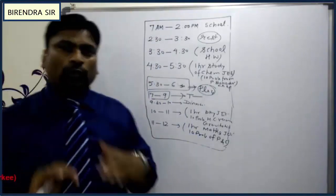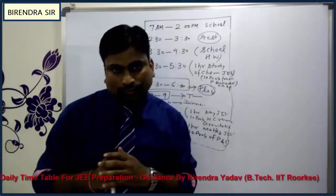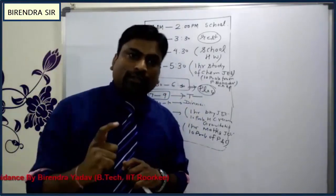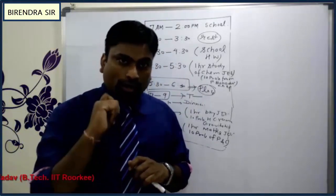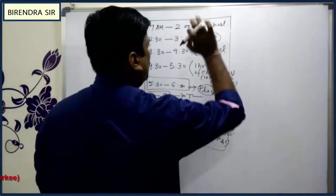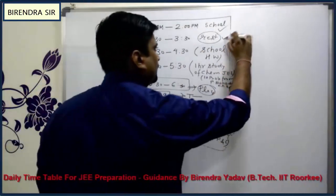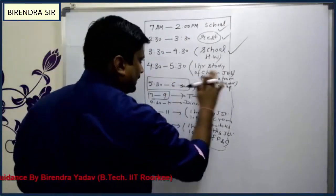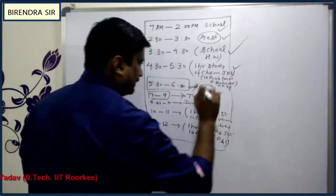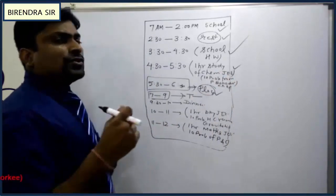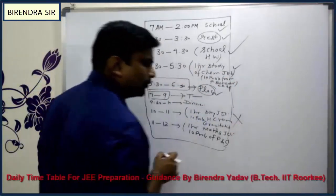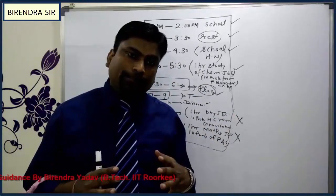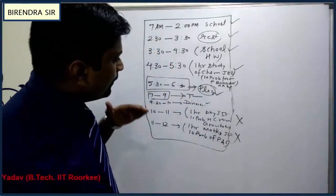On Monday, try to follow this schedule. On Monday night, do an analysis of the work you have done. If you went to school, put a tick mark. Took rest — tick. Done school homework — tick. Studied chemistry — tick. If for some reason you did not do something, put a cross mark. After analysis, you may find two cross marks.